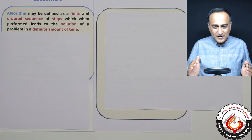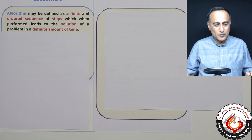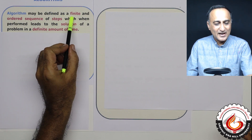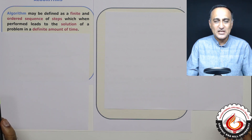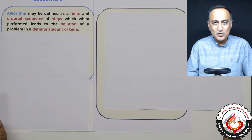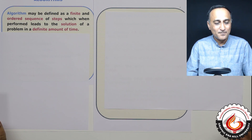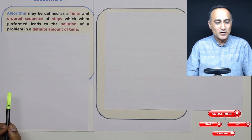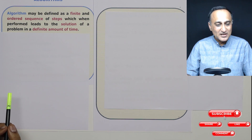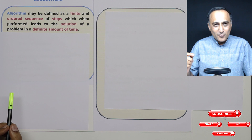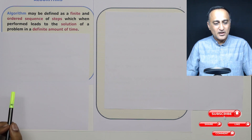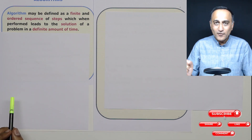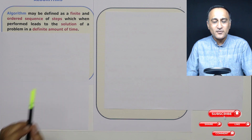An algorithm may be defined as a problem-solving approach which has a finite and ordered sequence of steps. That means if you're solving a problem, the number of steps should have an end — you cannot have an infinite number of steps. Those steps should be in a particular order, a particular sequence. If you follow that order and that particular logic, it will lead to the solution of a problem in a definite amount of time.